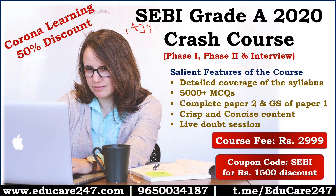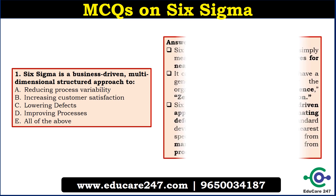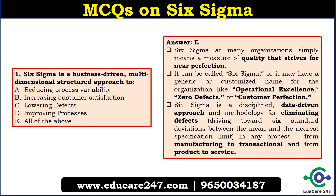The first question is: Six Sigma is a business-driven, multidimensional, structured approach for which of the following? Option A is reducing process variability. Option B is increasing customer satisfaction. Option C is lowering defects. Option D is improving processes. And Option E is all of the above. The answer is all of the above.